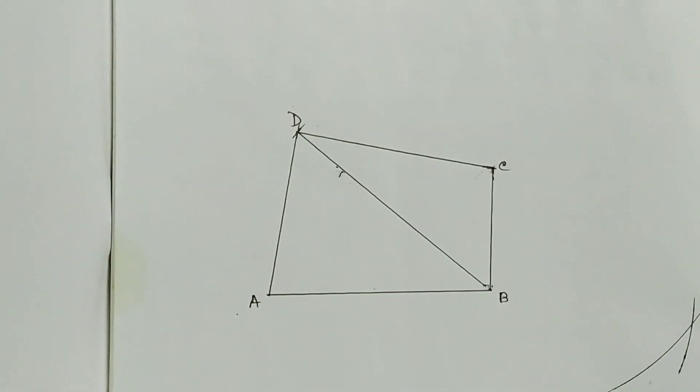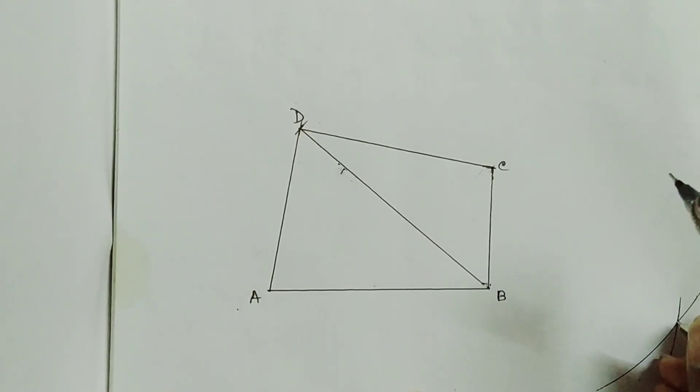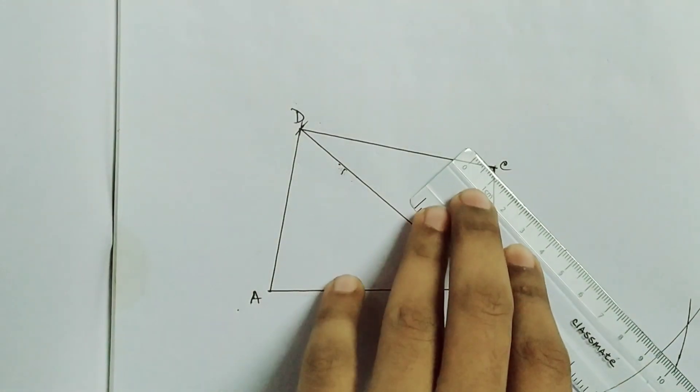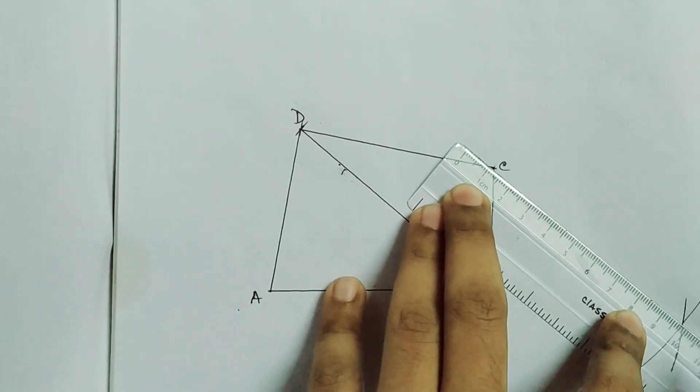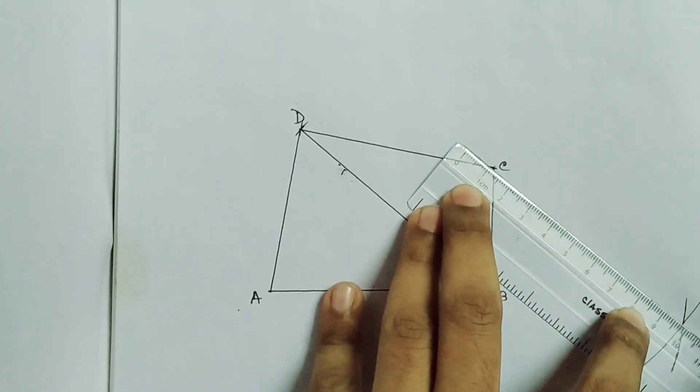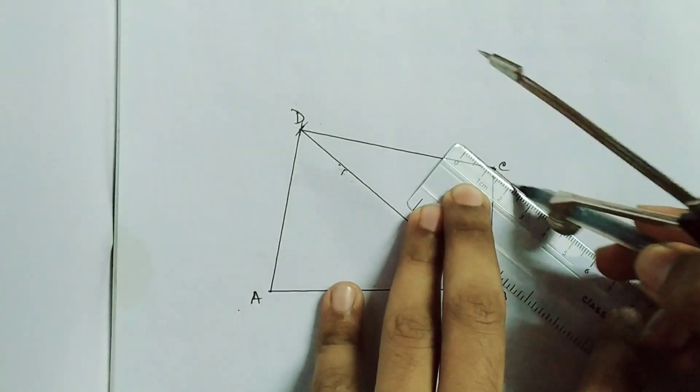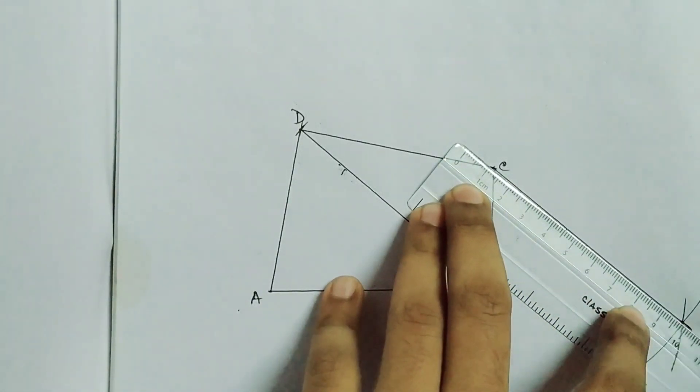Then the thing we have to do is just to join these two points, we have to join this point with the point C. So I am joining this arc.